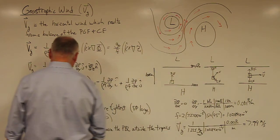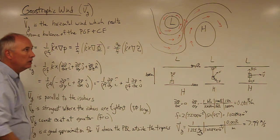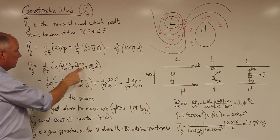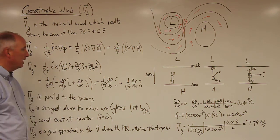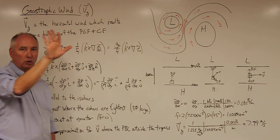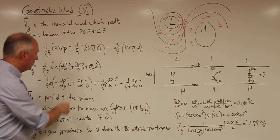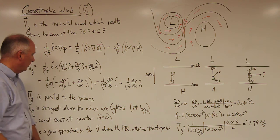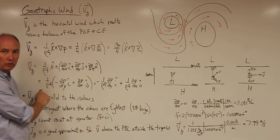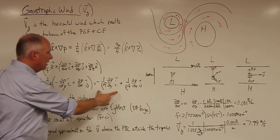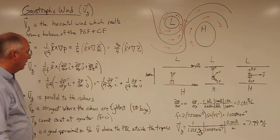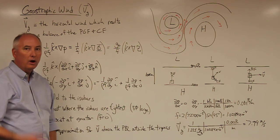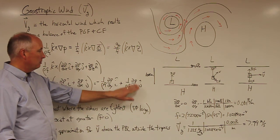When you do k-hat cross the gradient, k cross j gives the minus i-hat direction, so we get partial p over partial y in the minus i-hat direction. And k cross i gives the positive j-hat direction, so we get partial p over partial x in the j-hat direction. The k cross k term goes to zero, which is why it doesn't appear. Distributing the 1 over density times the Coriolis parameter gives the i-component of the geostrophic wind as proportional to partial p over partial y, and the north-south component proportional to partial p over partial x.